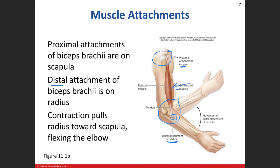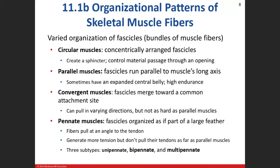Now let's talk about muscle patterns — specifically fascicle arrangement. Skeletal muscle is striated, and on gross inspection this gives us visible fascicles — the pattern of muscle fibers. There are four different organizational types. The first is circular — we saw this with the orbicularis oris and orbicularis oculi. Circular muscles are usually found around an opening of some sort.